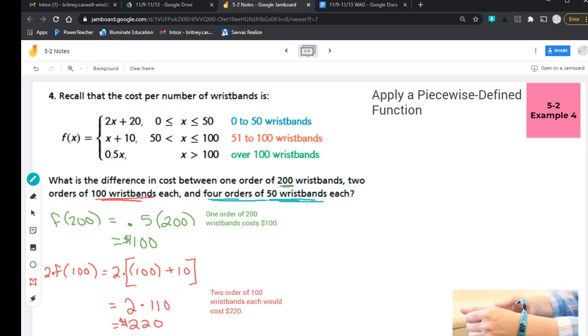So two times 50 is 100 plus 20. So I'm looking at four times 120. And I'm going to squeak that in just right there at the bottom at 480 bucks. So when I go to write my note here, I'm going to say four orders of 50 wristbands would cost $480.